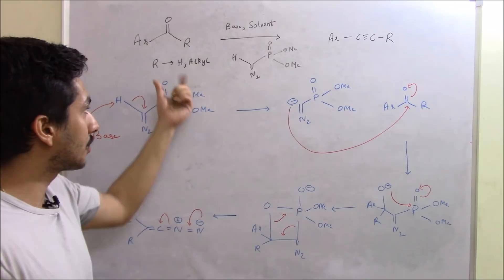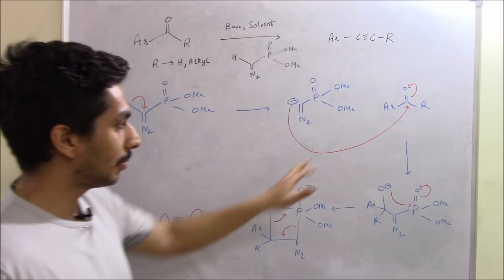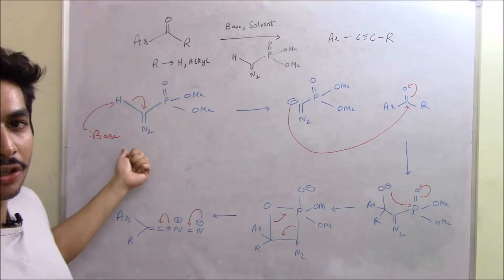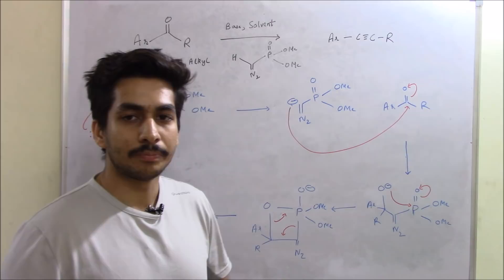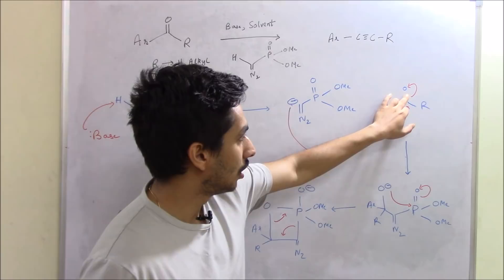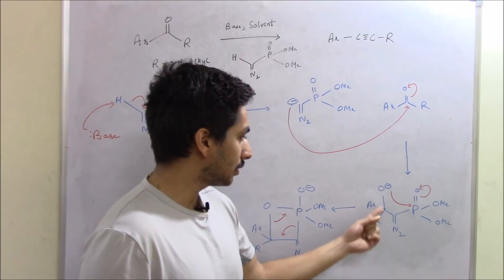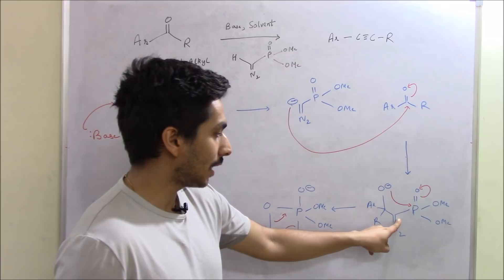I'll discuss the reason for that later, but let's focus on the mechanism first. The negative charge generated on abstraction of hydrogen by the base attacks the electrophilic carbon — the carbon attached to the oxygen in the aldehyde or ketone. One of the bonds migrates to oxygen forming O⁻. So now we have this intermediate where C=N₂ group is attached to a carbon bearing O⁻, an aryl group, and an R group.